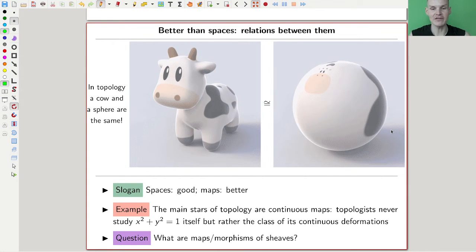The main slogan, which originates in last century's mathematics, is that spaces are nice. Everyone likes spaces. But maps are actually much better. If you want to think about an easier example than my cow here, think about linear algebra. Okay, a vector space is a nice thing. But really, a matrix is what makes linear algebra important. So the same type of flavor applies everywhere in mathematics, right?